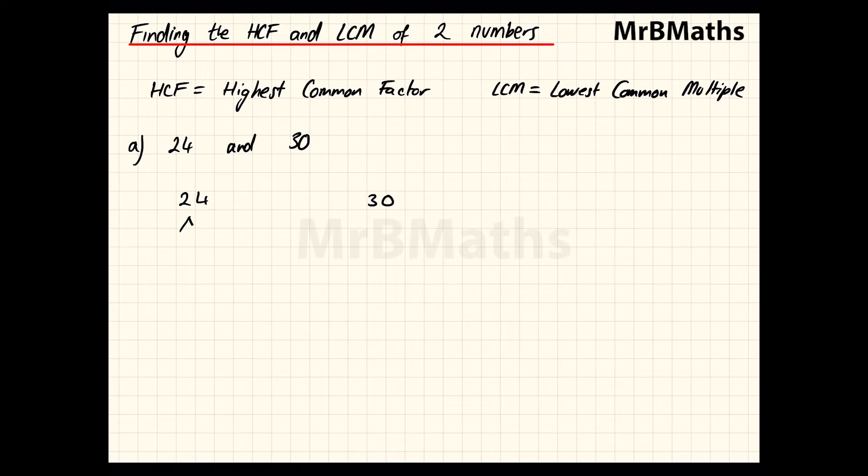I'll start with 2 and 12, circling the 2 because it's prime. Then 2 and 6, then 2 and 3. I'll circle these as they're all prime. Now I'll rewrite: 24 = 2 × 2 × 2 × 3, which is 2³ × 3.